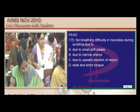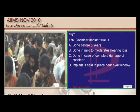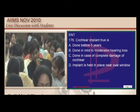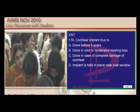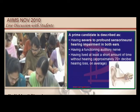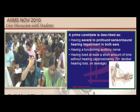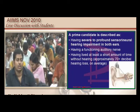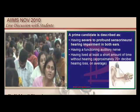For cochlear implant: the minimum hearing loss required is 90 decibels — mild to moderate loss does not qualify. It is placed closer to the round window. It is not done if there is complete cochlear damage. It is generally done at 2 to 4 years, so 'done before 5 years' is a true statement. Cochlear implant is a favorite topic in past 5 years exam papers.